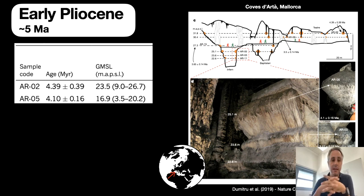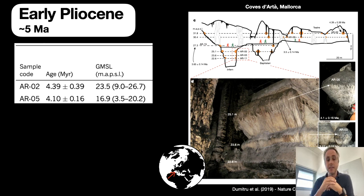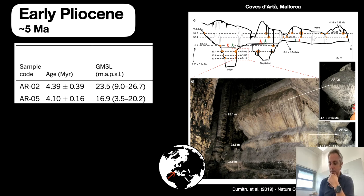So we go from 10 to 20-plus meters of sea level equivalent in the early Pliocene, which is more or less in line with what is found in the caves of Mallorca — again corrected for dynamic topography and post-depositional tectonics — at 4.3 to 4.1 million years. So probably a slightly different interglacial, but still sea levels on the upper end of 20-plus meters. Overall we go from about 9–10 to 20-plus meters during the early Pliocene.